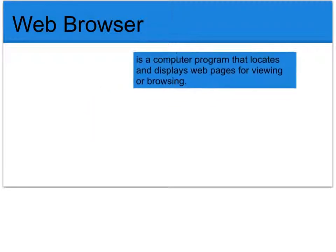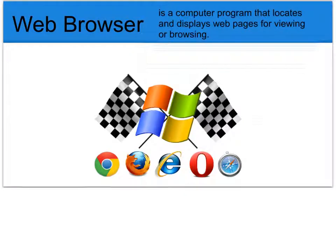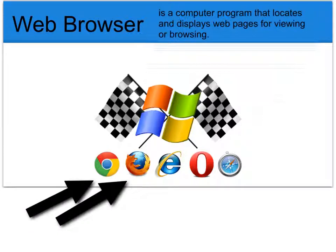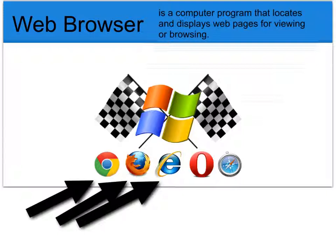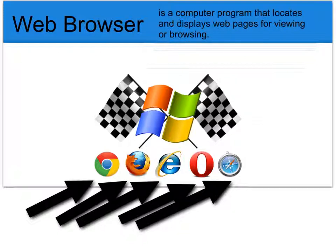A web browser is a computer program that locates and displays web pages for viewing or browsing. Some of the web browsers that you may have used might be Google Chrome, Firefox, Internet Explorer, Opera, or Safari. These are some of the more popular web browsers that people surf the Internet with on the World Wide Web.